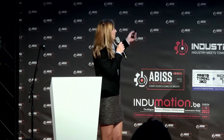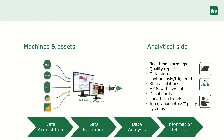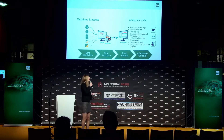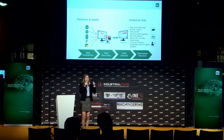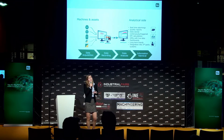We also have a counterpart called IBA Capture, which basically does the same thing but for camera data — so video and images. All of this data is stored into data files. Afterwards, offline, this data can be visualized with a tool called IBA Analyzer. IBA Analyzer is a software that allows you to open the data, visualize it, and make some analysis on it — for example, KPI calculations.